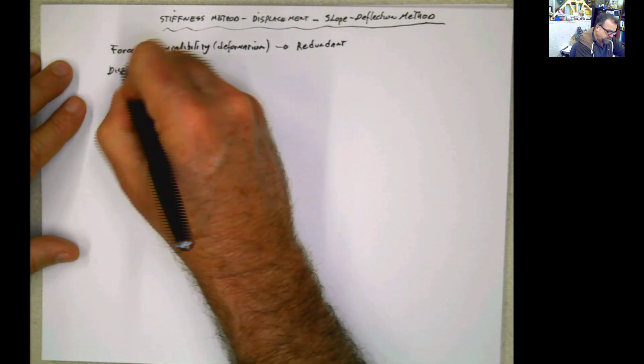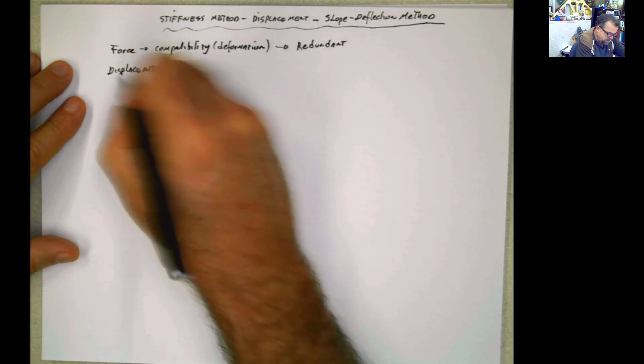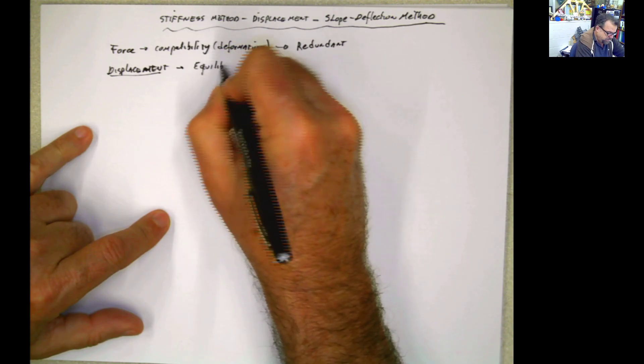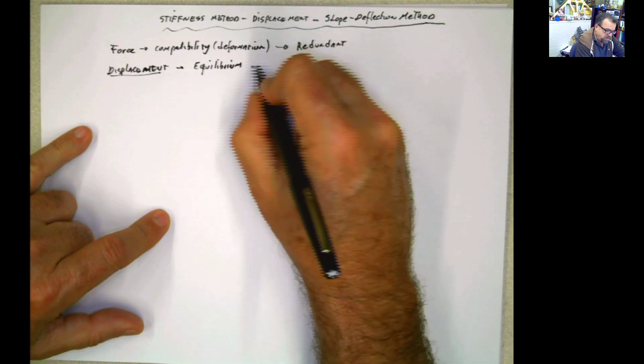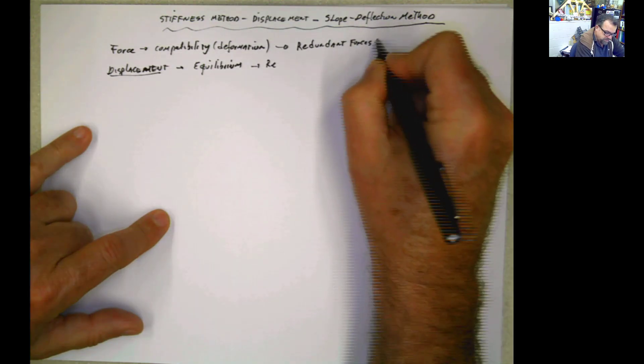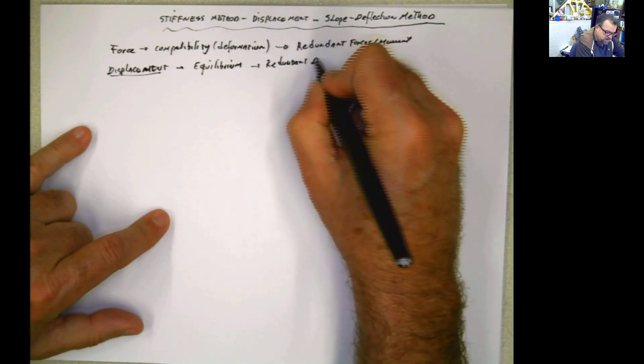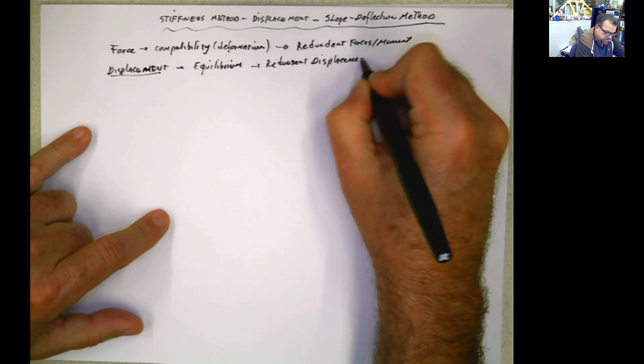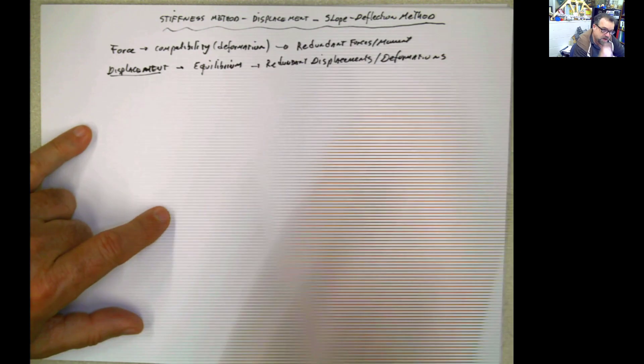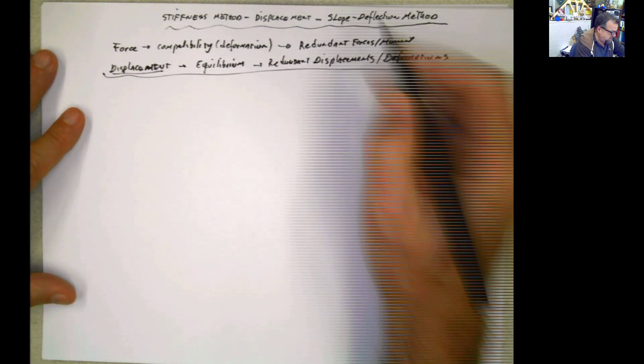For the method of the displacement, what we do is that we use the equations of equilibrium of the structure in order to find the redundant forces and moments. In this case, we are going to find the redundant displacements or deformations. And then all the forces and moments are going to be calculated in terms of these redundant deformations.